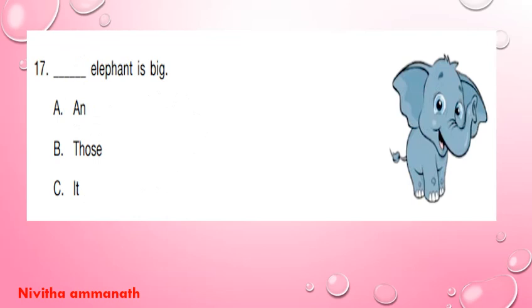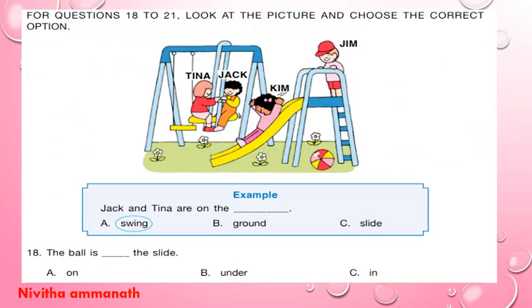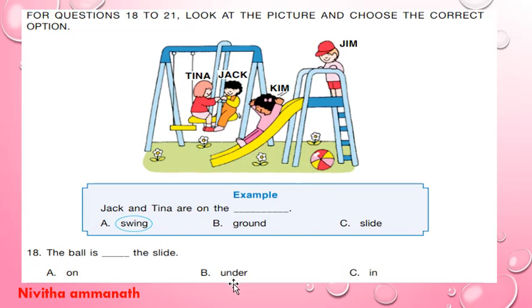For questions 18 to 21, look at the picture and choose the correct option. Jack and Tina are on the dash — Jack and Tina are on the swing. The ball is dash the slide — the ball is under the slide, so 18B is the correct option.